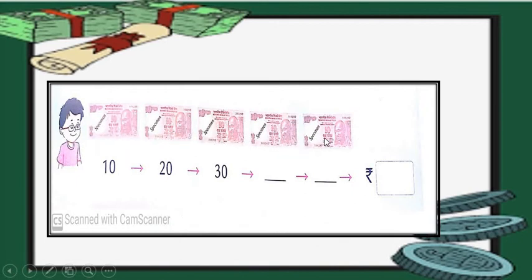Here you can see some images of notes. What is the value of that note? 10 rupees note. Let us see. How many notes are there? 1, 2, 3, 4 and 5. What is the total? 10 plus 10, 20. 20 plus 10, 30. 30 plus 10, 40. 40 plus 10, 50. So, the total value of given notes is 50 rupees.